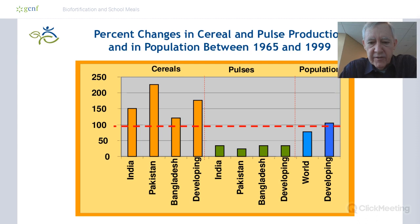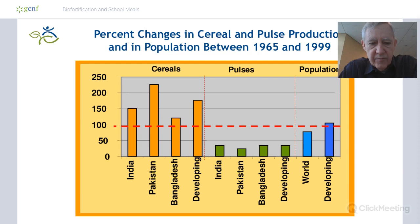This is a diagram I've been showing for many years, and it shows what's been happening with what we dub as the Green Revolution. That dashed red line across the middle represents a 100% increase between 1965 and 1999. The blue bar is the developing country population, which doubled during that period. Policymakers knew that huge population explosion was going to happen.